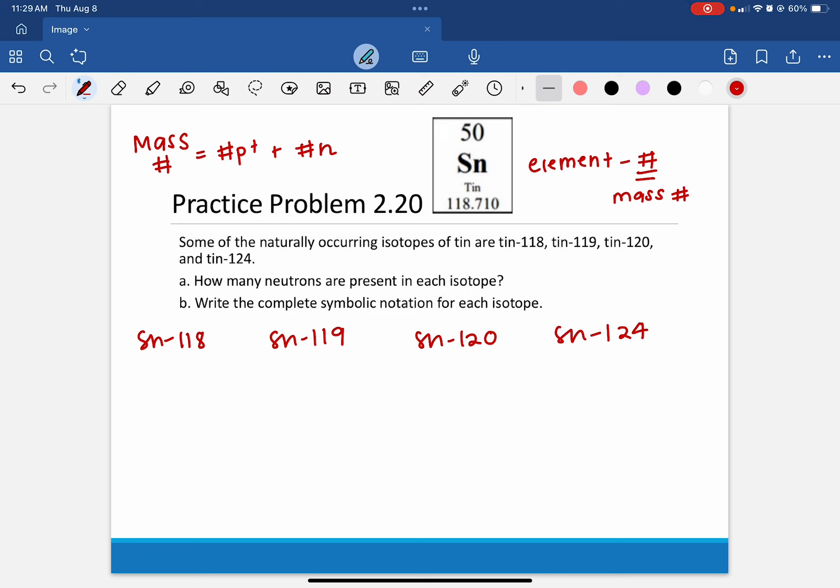Letter A asks us to determine what the total number of neutrons is, and we're going to use the mass number for that. So mass number 118 equals the total number of protons, which we know from looking at the periodic table here. Again, that is the atomic number, which is the number of protons. It's going to be 50 for every single one of these versions of tin.